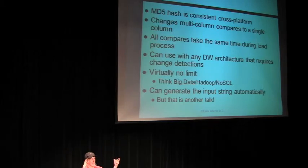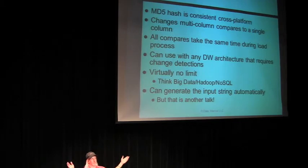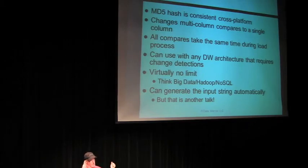So, the MD5 hash, if you're using the standard ones, an MD5 hash algorithm is consistent across platforms. So now you can talk about trying to do that federated data warehouse stuff and compare things that are in MySQL, Oracle, SQL Server, or even on Hadoop. And if you have the same set of attributes and you encode them the way I just showed you, they'll actually get a consistent result between the two. So you can actually do the comparisons. You change your multi-column compares to a single-column compare. All the compares are then going to take the same amount of time. It's the same size, no matter how big it is.